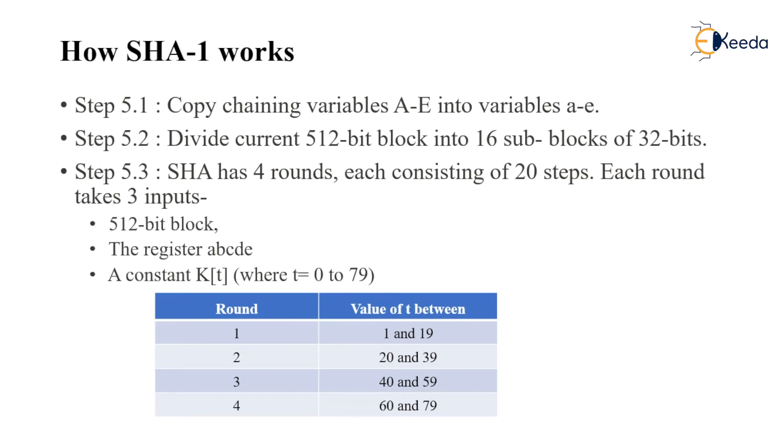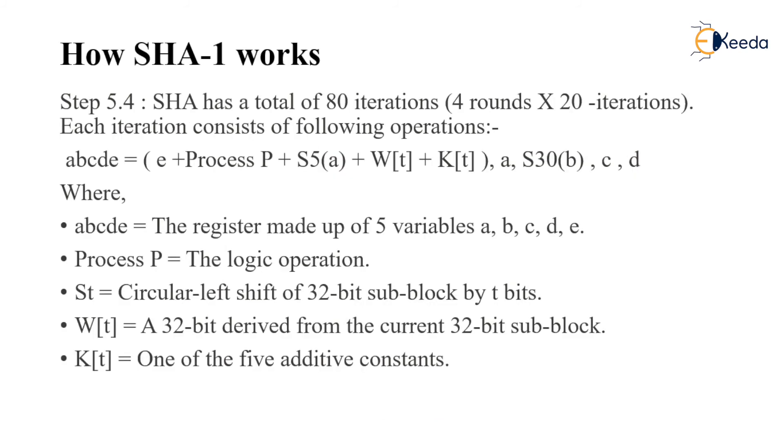The variable T is responsible for shifting of the bits when the circular left shift takes place. Step 5.4: SHA-1 has a total of 80 iterations. That means 4 rounds, and for every round 20 steps are needed.